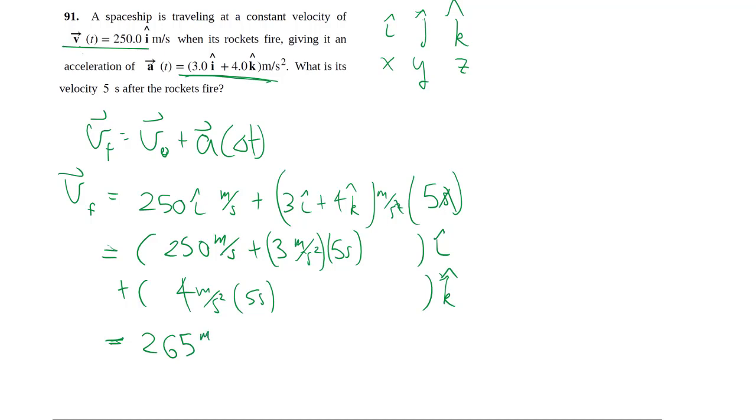And then we just do them each separately, and they don't mix, these i's and these k's. If you want it to look a little prettier, sometimes we collect just the units in the back, like that. And so that is the velocity of the spaceship five seconds after the rockets fire.